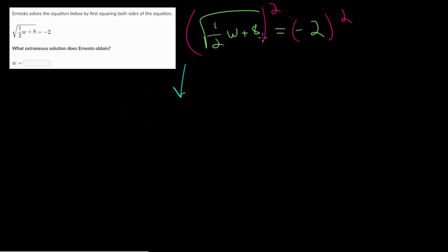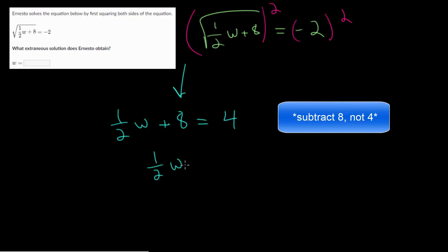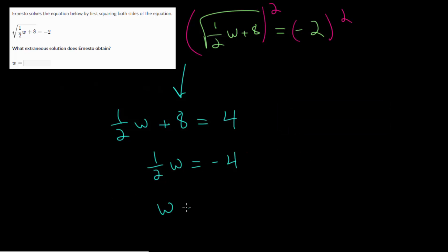And so squaring a square root, they cancel each other out. So we get 1 half w plus 8 and minus 2 squared. The negatives will cancel out and we'll get a positive 4. And now we just need to solve this linear equation. So let's subtract 4 on each side. So 1 half w is negative 4 and multiply each side by 2. So that w is negative 8.